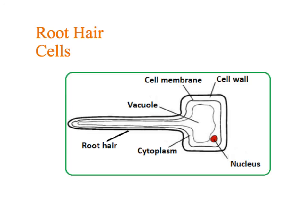Root hair cells - those found in the roots of a plant - are adapted using Fick's Law by having a large surface area. The root hair provides a large surface area for a root hair cell. Another structural adaptation, not using Fick's Law, is that they also have to take up ions against the concentration gradient, so there are lots of mitochondria to provide enough energy for that process.